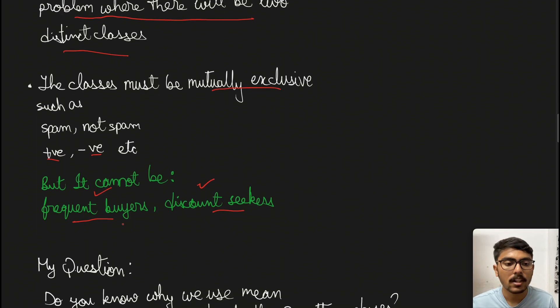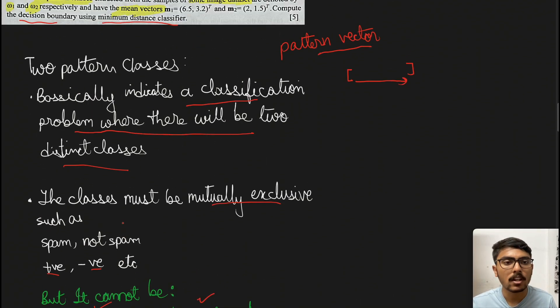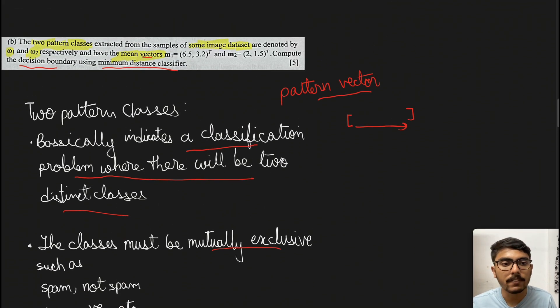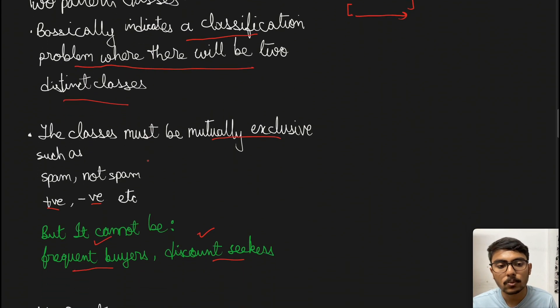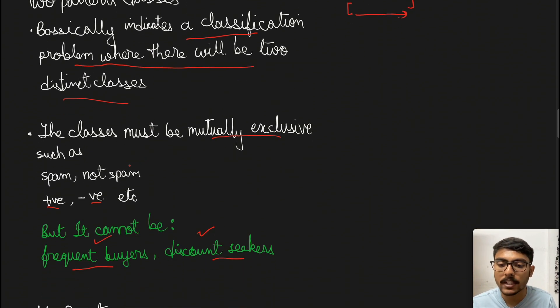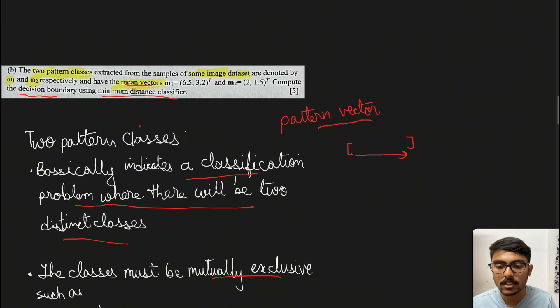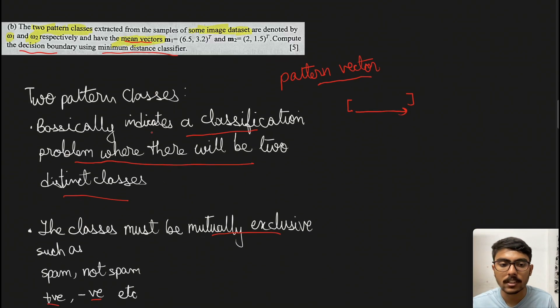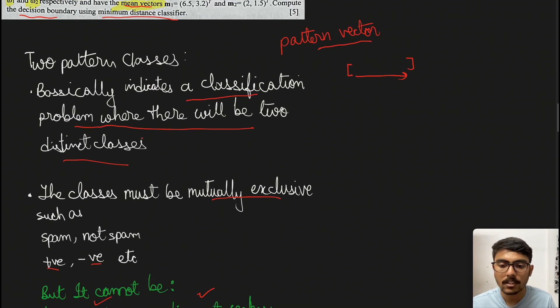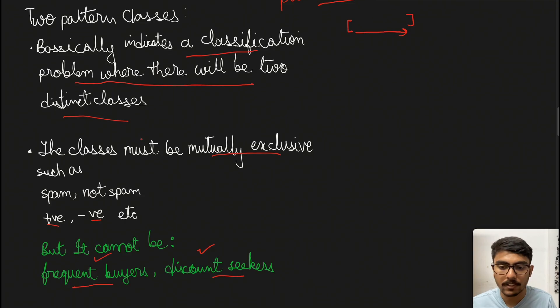Now the next part - we're given mean vectors. Why do you think we're given mean vectors? We could have been given the entire dataset and computed minimum distance from that and performed the decision boundary equation. Why only mean vectors?